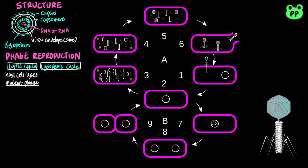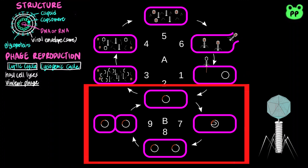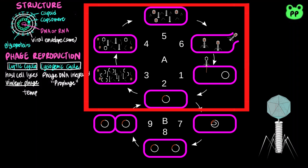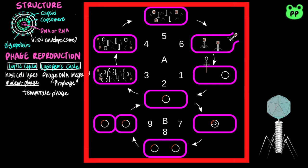During a lysogenic cycle, phage DNA integrates into the bacterial chromosome, becoming a prophage. Next, the bacterium reproduces normally, copying the prophage and transmitting it to daughter cells. Many cell divisions produce a large population of bacteria infected with prophage. An environmental signal can trigger the virus genome to exit the bacterial chromosome and switch to the lytic mode. Phages that use both the lytic and lysogenic cycles are called temperate phages.